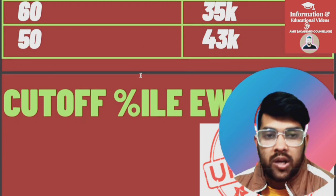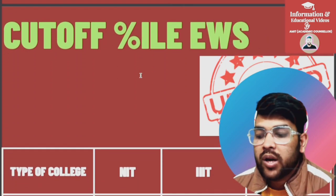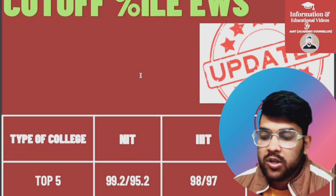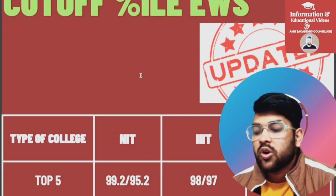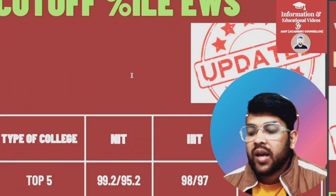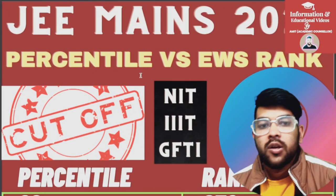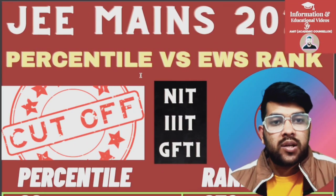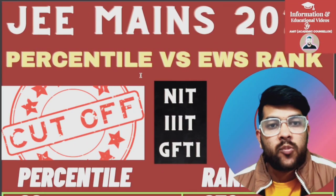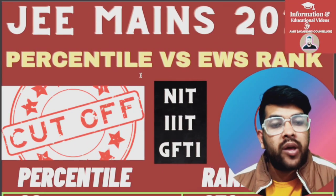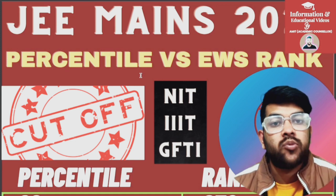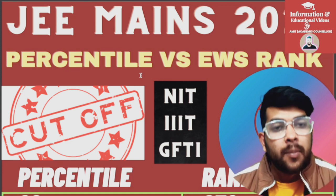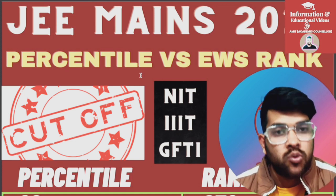What percentile for EWS category to get into an NIT, Triple IT, or GFTI college? Here is the information. For top 5, 99.2. This is Amit and you are at my channel 'Information'. Let's go to the video — I am going to provide very important information for EWS students personally.